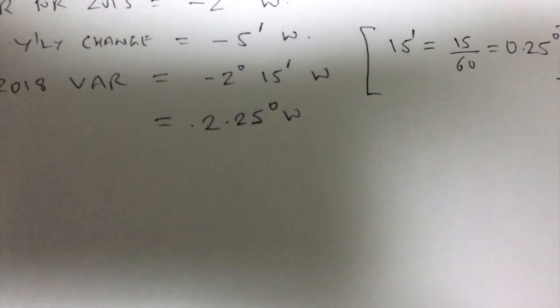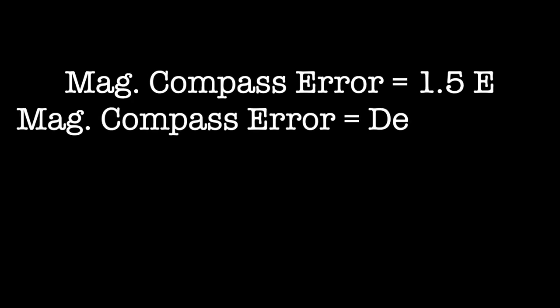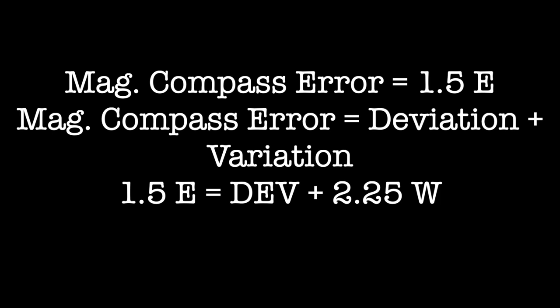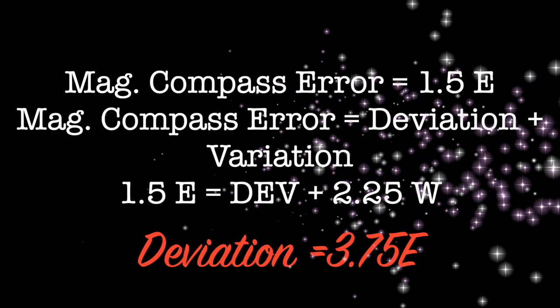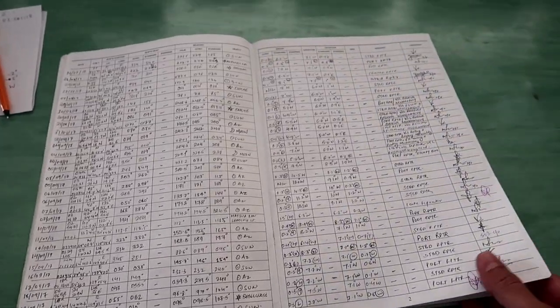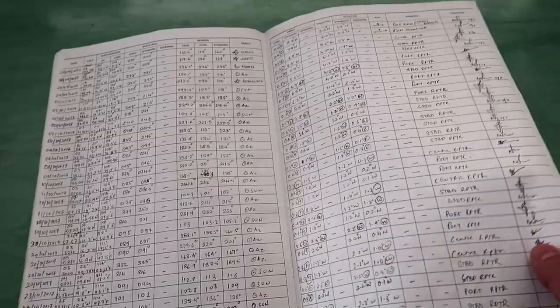Magnetic compass error we have already found out - 1.5 degrees east. Magnetic compass error is also deviation plus variation. To find out deviation, we have to subtract magnetic compass error and variation, so we will subtract. Deviation is 3.75 degrees east.